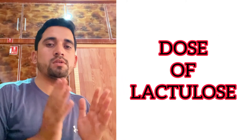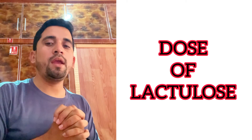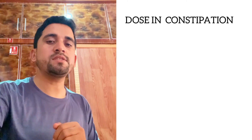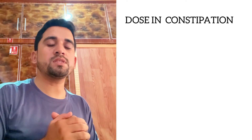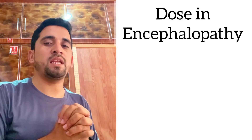Let me talk about the dose of lactulose in these two conditions. In constipation, the dose of lactulose is 15 to 45 ml, containing 10 to 30 mg of the drug, administered two to four times a day, until the formation of soft stools.